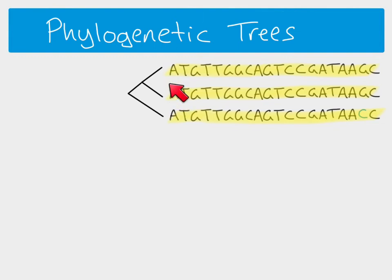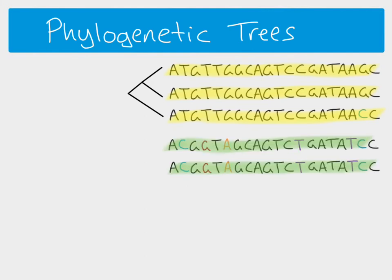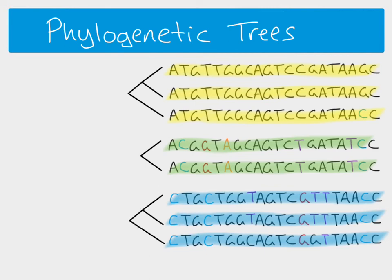These two are more closely related, so this branching point is more recent in evolutionary history. The third species links to those two further back, representing an older divergence point. Then we've got two other sequences that are very closely related to one another, and another two that are also very closely related, with a fifth species closely related to that pair — we can link it in accordingly.